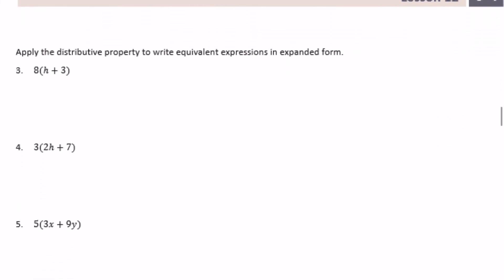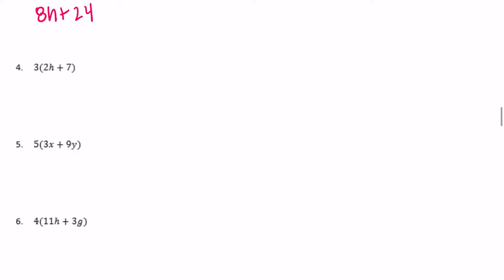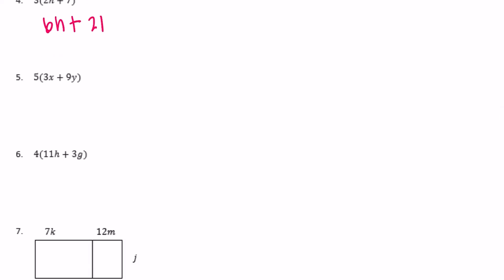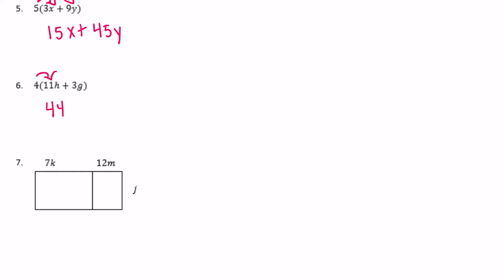Now applying the distributive property without models. 8(h+3): 8 times h = 8h, plus 8 times 3 = 24, so 8h plus 24. For 3(2h+7): 3 times 2h = 6h, plus 3 times 7 = 21, giving 6h plus 21. For 5(3x+9y): 5 times 3x = 15x, plus 5 times 9y = 45y. For 4(11h+3g): 4 times 11h = 44h, plus 4 times 3g = 12g.